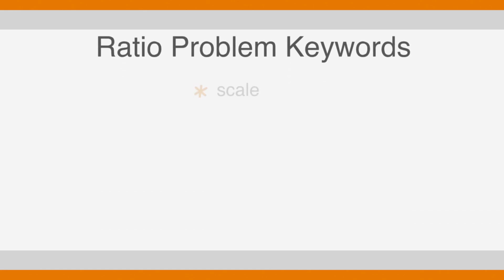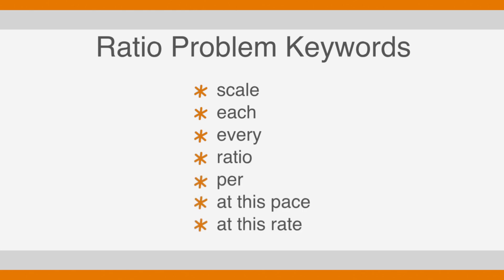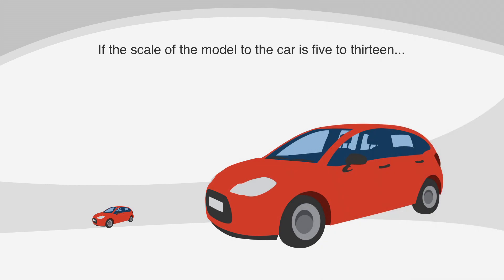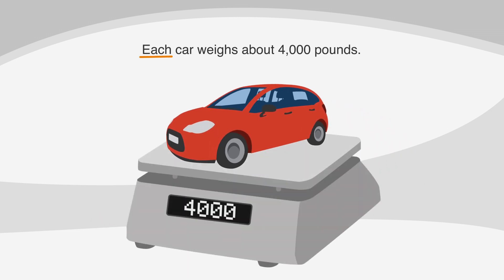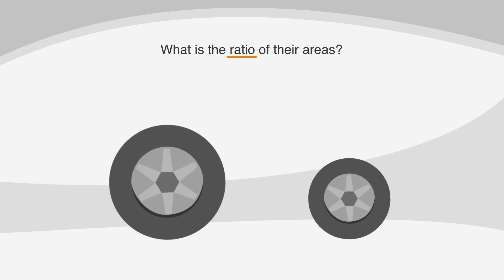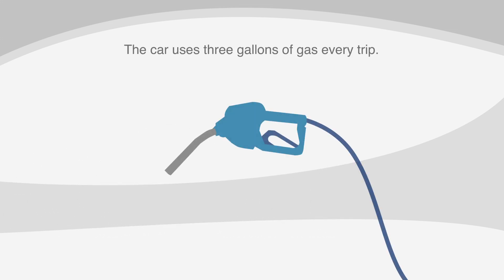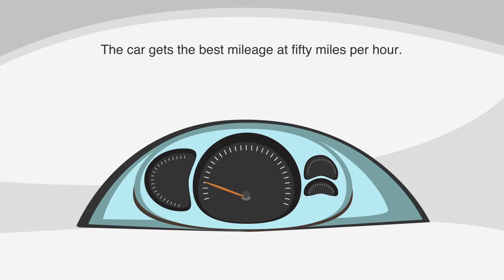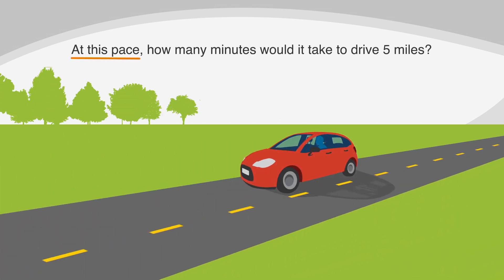The keywords for recognizing ratio problems include scale, each, every, ratio, per, at this pace, and at this rate. For example, you might see if the scale of the model to the car is 5 to 13. Or, each car weighs about 4,000 pounds. Another example is, what is the ratio of their areas? Or, the car uses 3 gallons of gas every trip. The car gets the best mileage at 50 miles per hour. Also, at this pace or at this rate indicates a ratio problem.